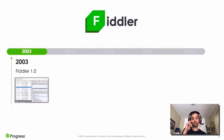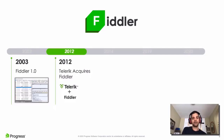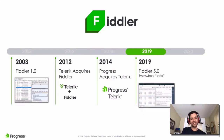Let me start with a timeline of the Fiddler story. Fiddler was first released back in 2003 as a free network debugging proxy on Windows only. It soon became a default go-to tool for network debugging. Fast forward to 2012, Telerik acquired Fiddler and thankfully kept it completely free to use. Progress then acquired Telerik and hence acquired Fiddler. It wasn't really until 2019 that we saw another major release of Fiddler, along with a beta release of the first new Fiddler tool in some time - Fiddler Everywhere.